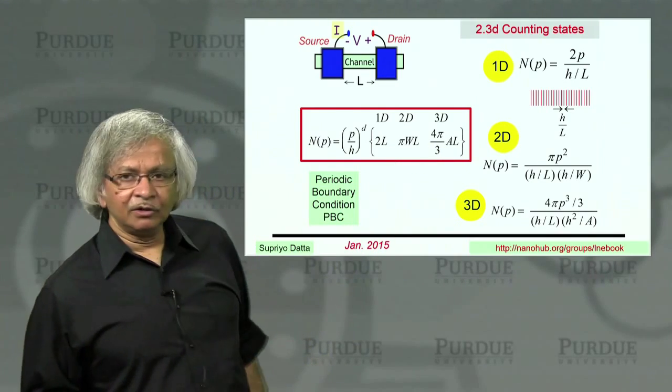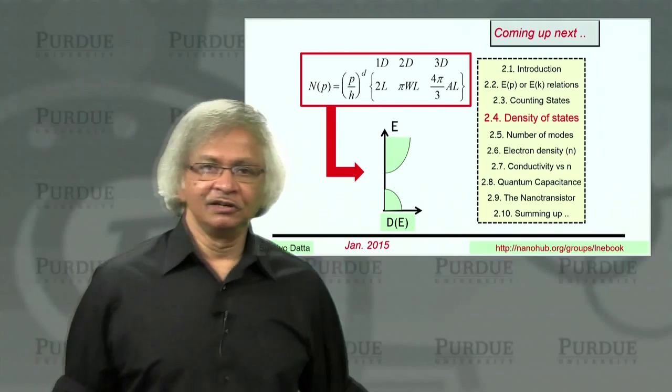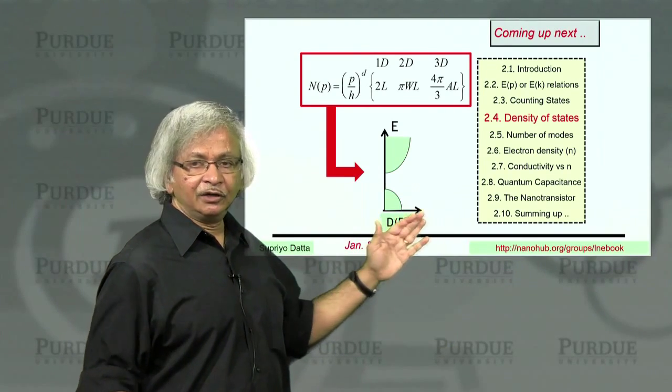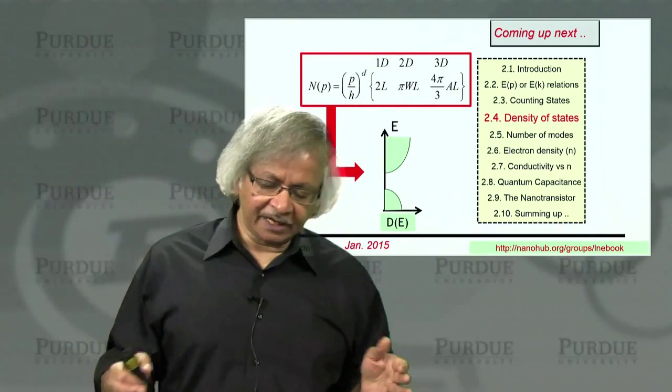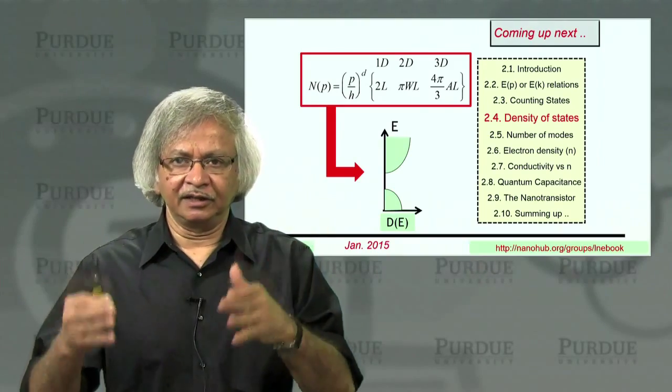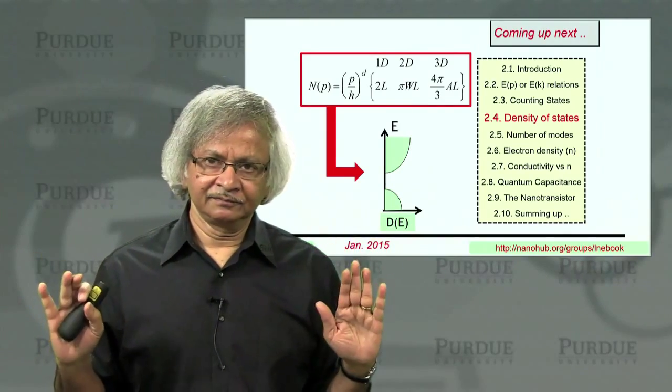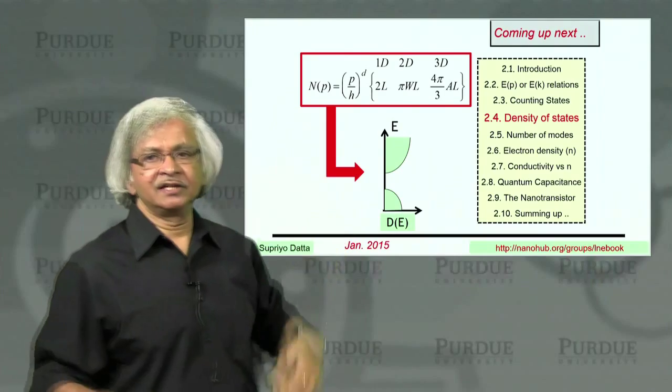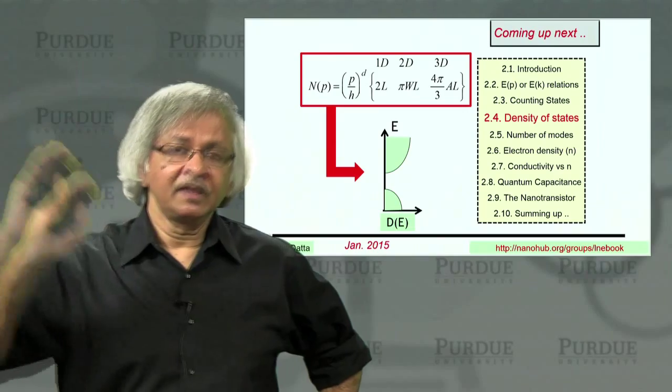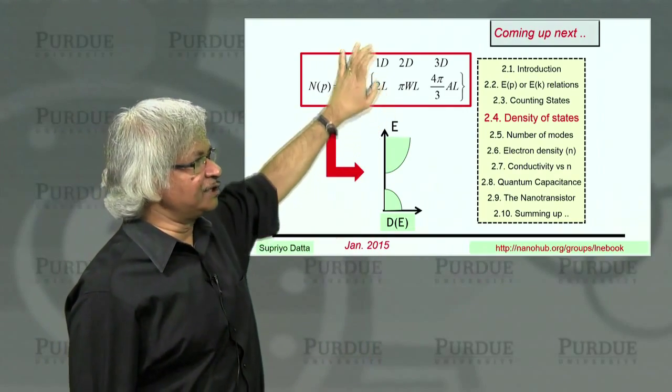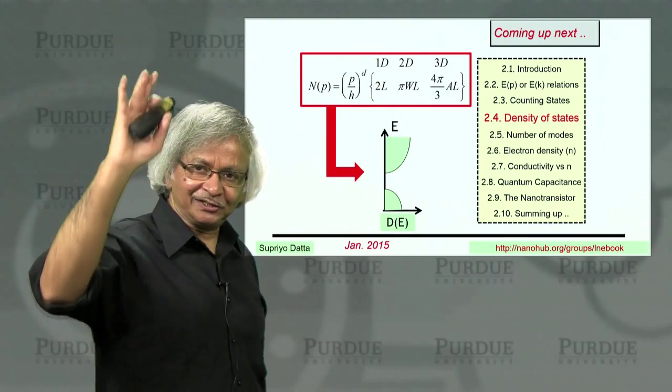So this is the function that we'll now use in the coming lectures to get on to what we really want to find, which is density of states and number of modes. Note that this comes simply from the idea that corresponding to a momentum, there is a de Broglie wavelength and it needs to fit into the box. And it doesn't make any use of the energy momentum relation at all. So this is a general method for counting states based on periodic boundary conditions that's widely used in solid state physics. And what we'll now do is couple it with the energy momentum relation from lecture two and try to get a density of states. That's the next lecture. Thank you.